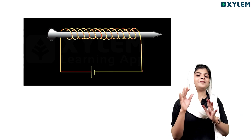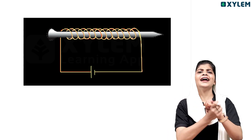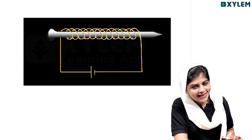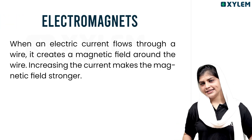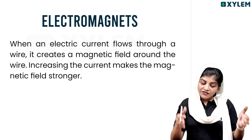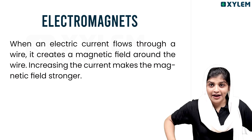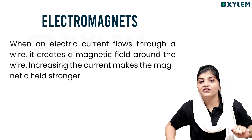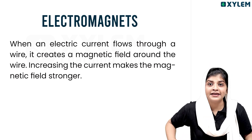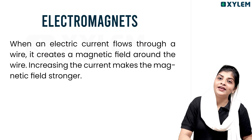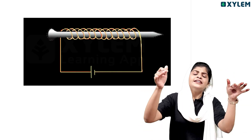This is an electromagnet. When an electric current flows through a wire, it creates a magnetic field around the wire. Increasing the current makes the magnetic field stronger.